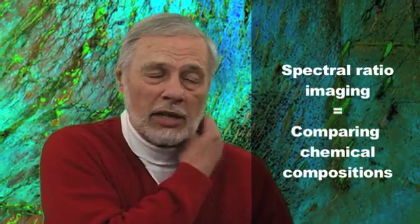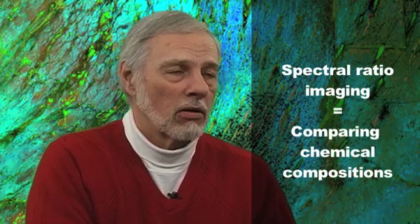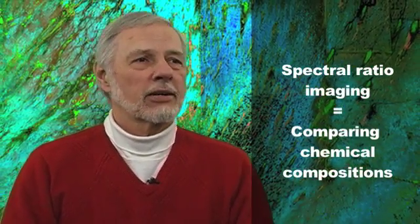Another useful technique is creating spectral ratio images. Consider a hillside: the slope toward the Sun is much brighter than the slope away from it, which may be in shadow. That bright-to-dark variation is controlled more by topography than by chemical composition — yet the slope is the same regardless of which wavelength band you're looking at.